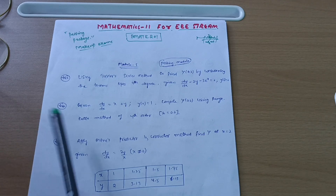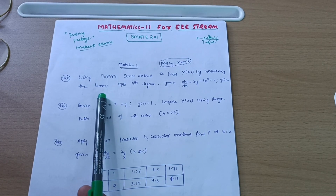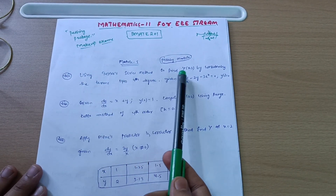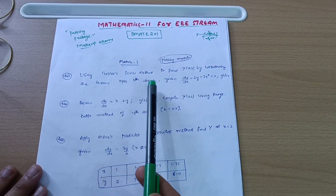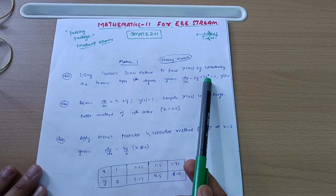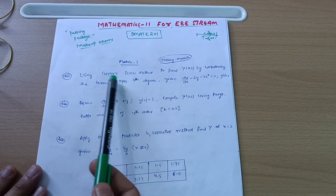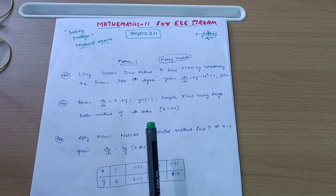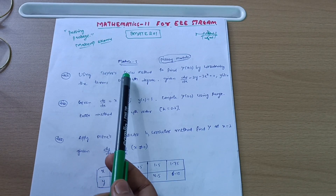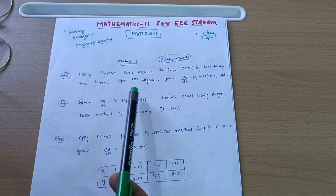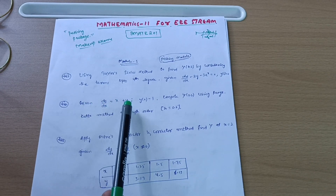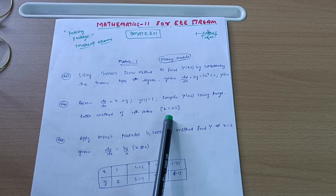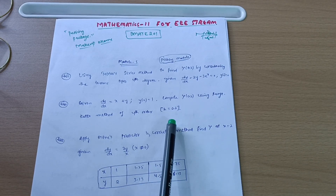First is Module 5, in which you have to grab compulsorily 20 marks by covering these three topics. Using Taylor's series method to find y(0.2), considering terms up to fourth degree, given dy/dx minus 2y minus 3e^x equals 0 and y(0) equals 0. A problem-solving video is available — link will be in the description. Go through three to four problems on this concept. Next: given dy/dx equals x plus y, y(0) equals 1, compute y(0.2) using Runge-Kutta method of fourth order where step length h equals 0.2.